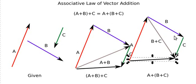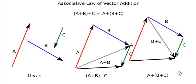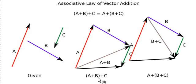I added b plus c and obtained its resultant, then added vector a to it, and we obtained the same resultant vector. These two vectors are the same — a plus b plus c is the same as a plus b plus c. This proves the associative law of vector addition.